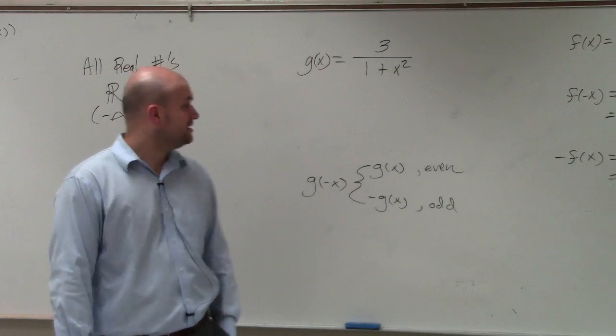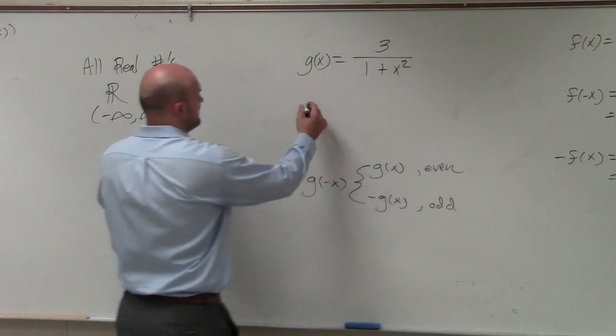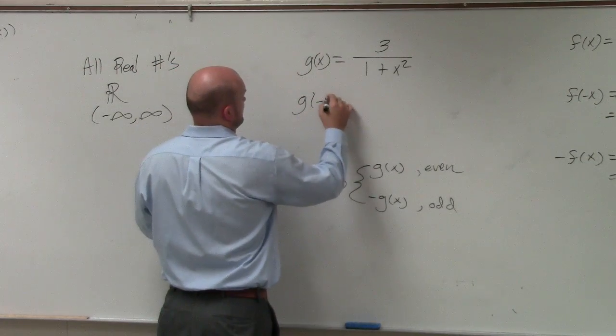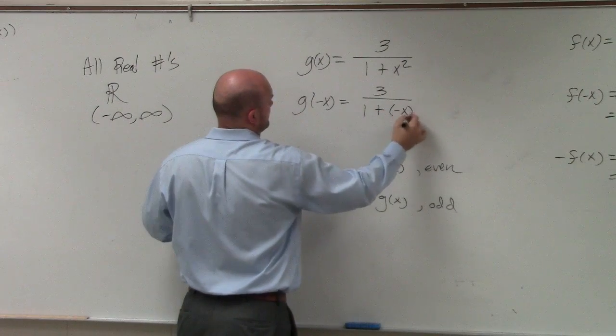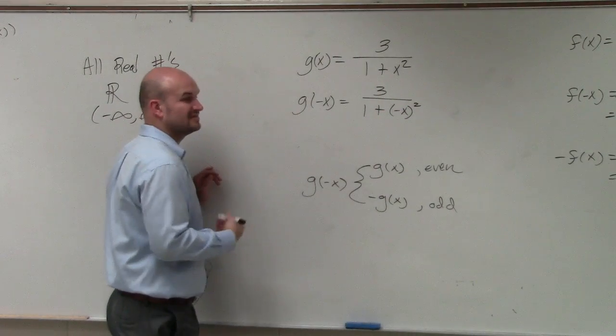That's basically all we have to do. So we plug in g of negative x. So wherever there's an x, I plug in a negative x. And then I simplify.